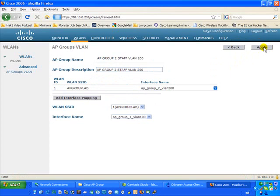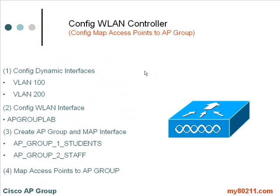That completes our AP Group configuration. Our last and final step is to actually map the access points to the AP Groups themselves. Recall the earlier slide with the student building on the left and the staff building on the right. For this tutorial, I have two access points pre-named: one for staff and one for students.